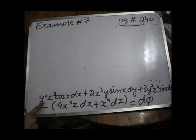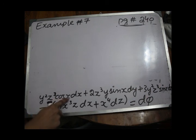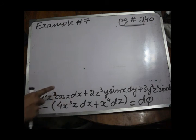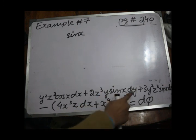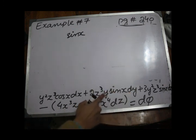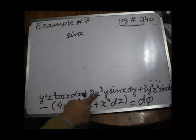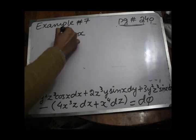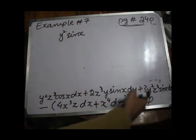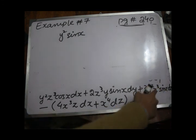Now examining the first group: in y² z³ cos x dx, the x-derivative gives cos x, so the original function in x must involve sin x. For the dy term with 2z³ y sin x, differentiating with respect to y gives 2y, so the original must be y² in y. For the dz term with 3y² z² sin x, differentiating with respect to z gives 3z², so the original must be z³.